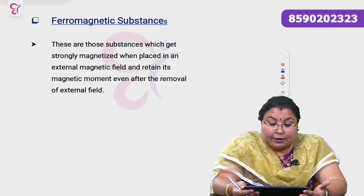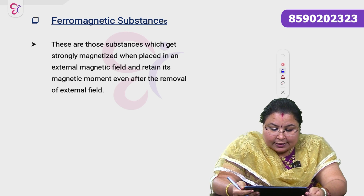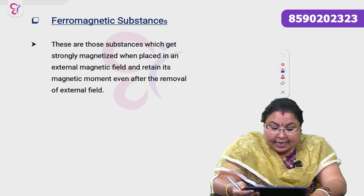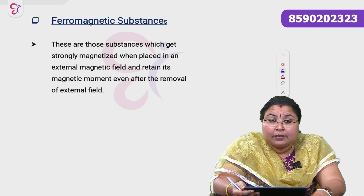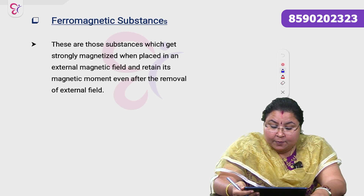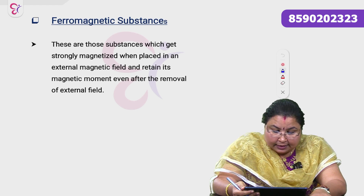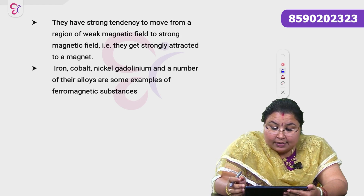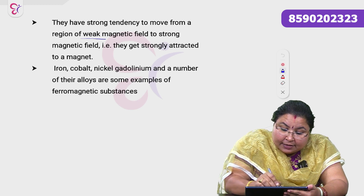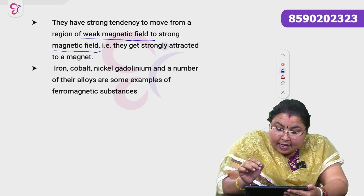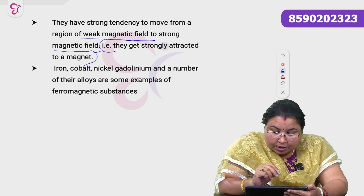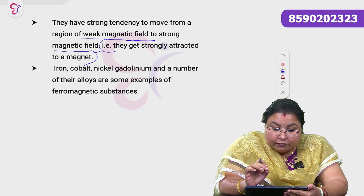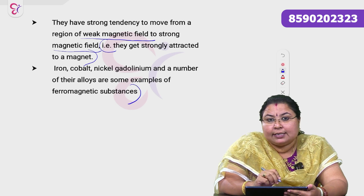Ferromagnetic substances are those which get strongly magnetized when placed in an external magnetic field and retain their magnetic moment even after the removal of the external field. They have a strong tendency to move from a region of weak magnetic field to a strong magnetic field — they are strongly attracted to magnets. Examples include Iron, Cobalt, Nickel, Gadolinium, and a number of their alloys.